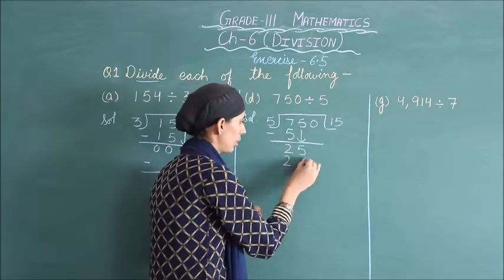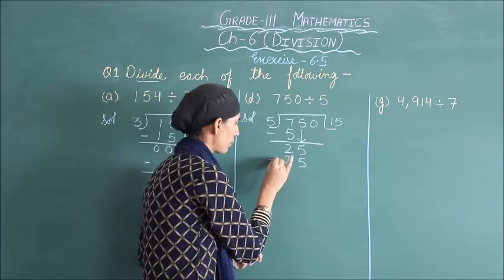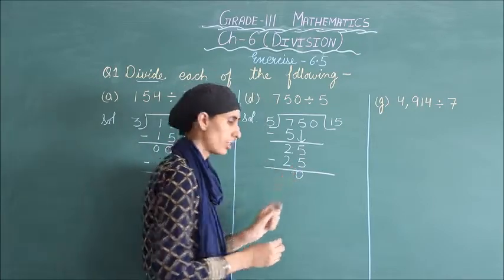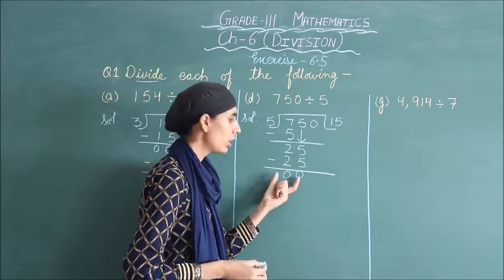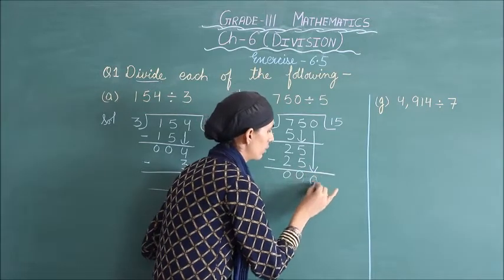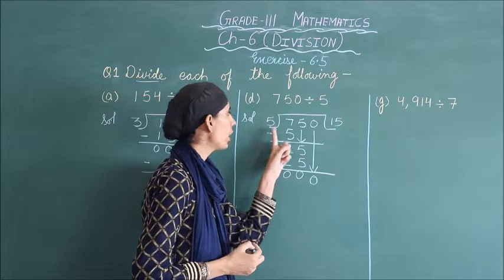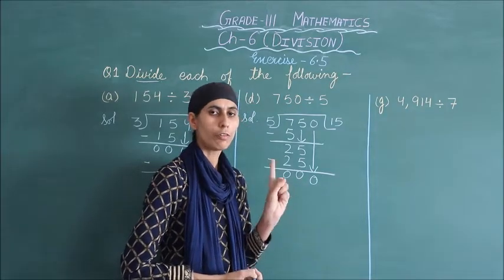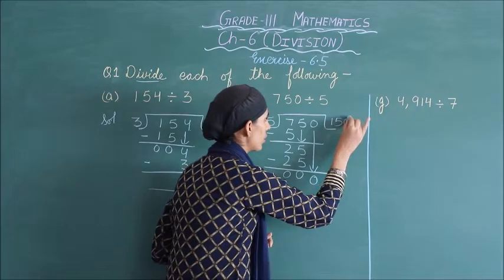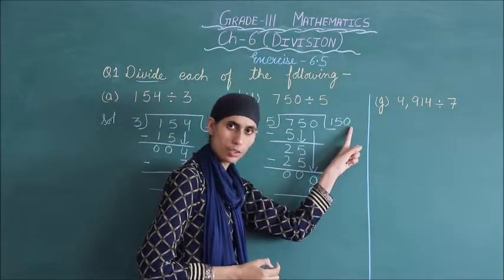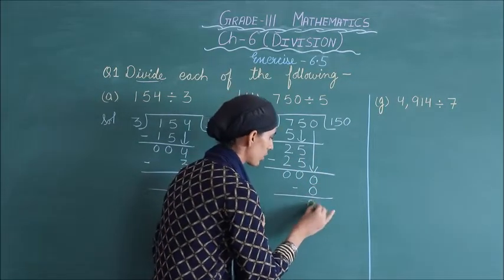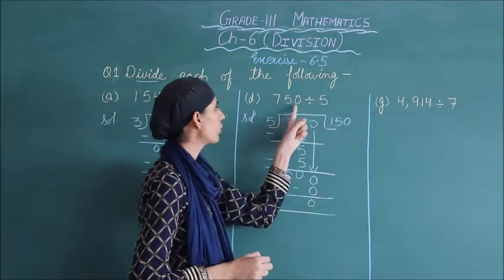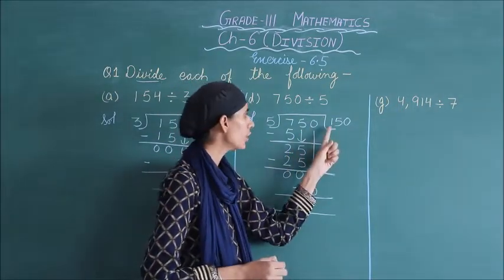5 fives are 25. Next step — subtraction: 25 minus 25 is 0. Now bring down the next digit, which is 0. We need to divide 0 as well. 5 zeros are 0, so we put 0 in the quotient. Even after subtraction, the answer remains 0. You must not skip dividing the 0. So when you divide 750 by 5, your quotient is 150 and your remainder is 0.